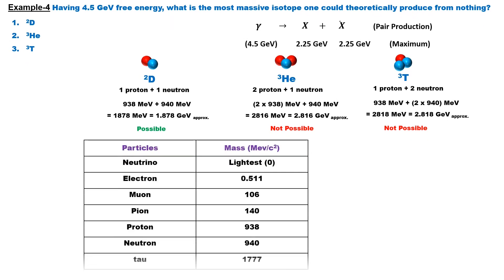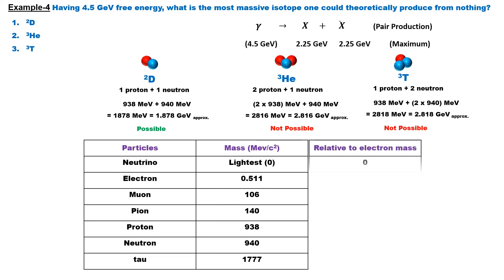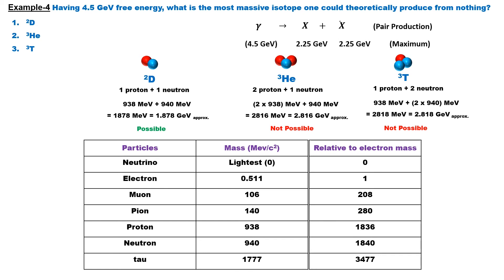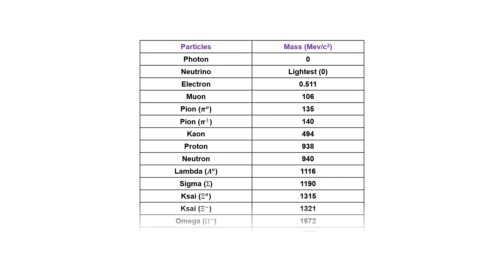Some particles have masses given in MeV. The neutrino has the lowest mass of all particles, and its exact value is debatable — for practical purposes its mass can be assumed to be almost zero. To help remember particle masses relative to the electron: the muon is 208 times the electron mass, the pion is 280 times, the proton is 1836 times, the neutron is 1840 times, and the tau is 3477 times. Masses of all other particles are listed in a reference table in MeV.